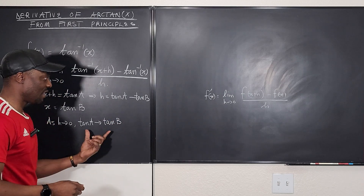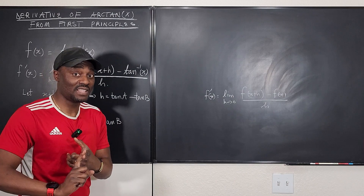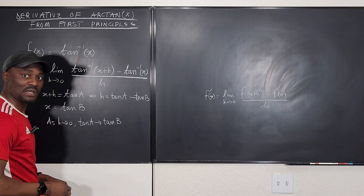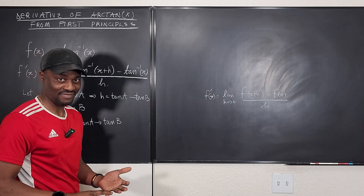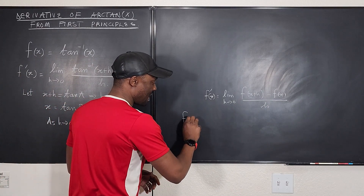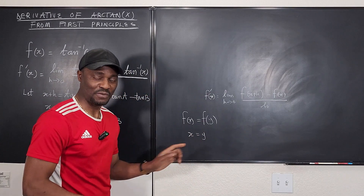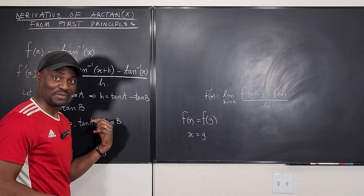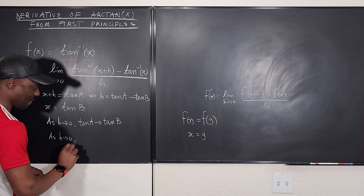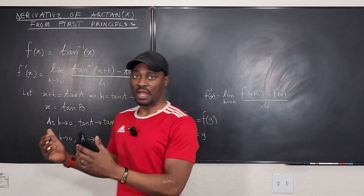Because arctan is a restricted, one-to-one function, there is an additional consequence. If tan(a) goes to tan(b), then a goes to b, because for a one-to-one function, f(x) equals f(y) only when x equals y. So we can also say that as h goes to 0, a goes to b. These are all the substitutions we need to continue the derivation.